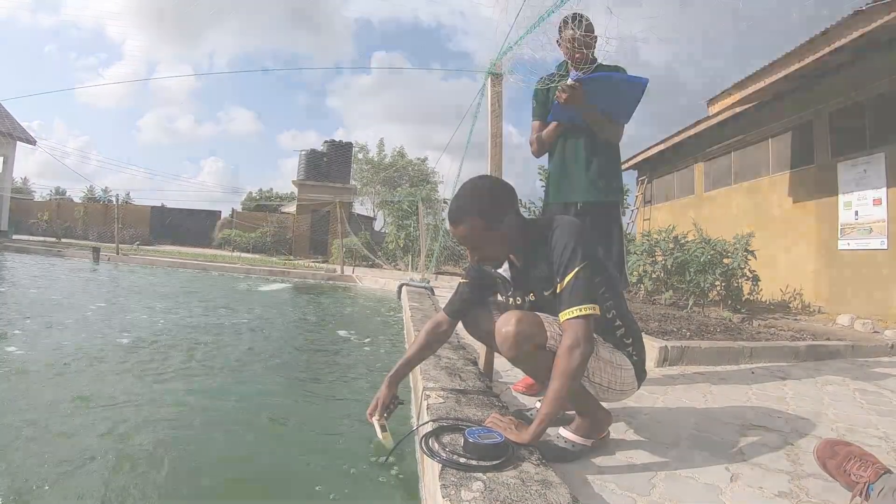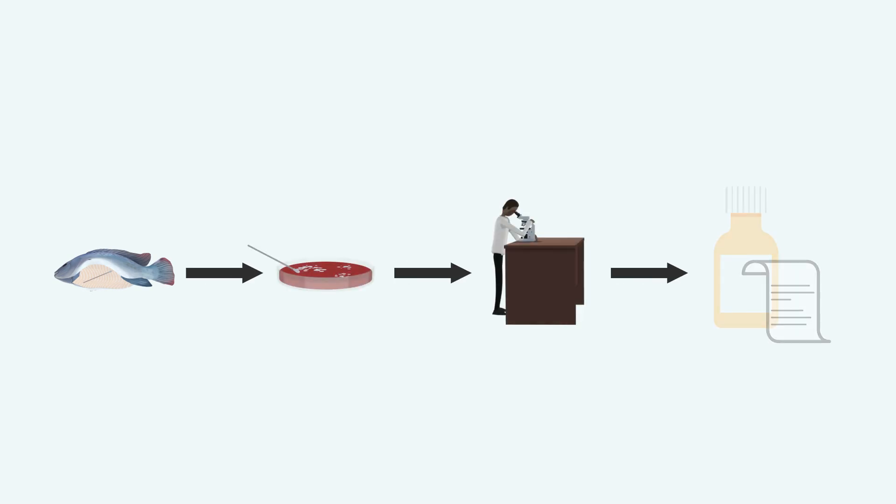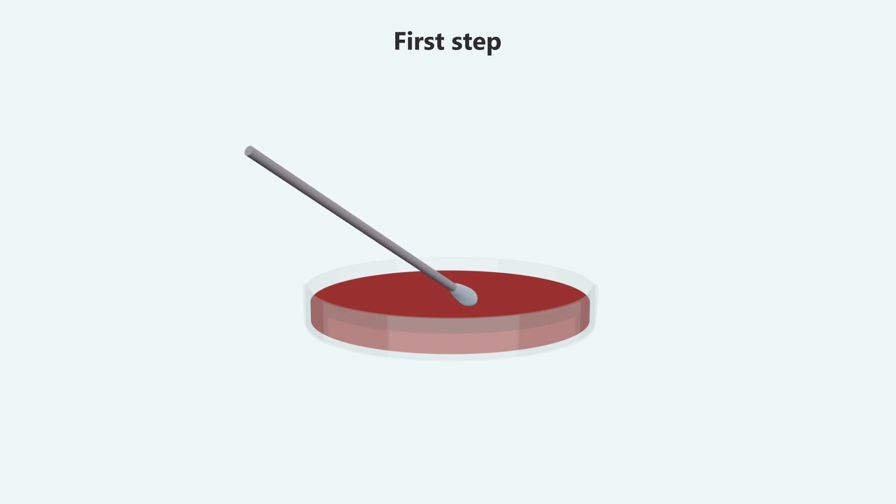It is always advised to do a proper diagnostic of the problem prior to initiating treatment, as improper usage of antibiotics can lead to AMR. The best practice for antibiotic usage is to follow a step-by-step approach. The first step is to get a proper diagnosis of the bacterial disease that is affecting your fish.